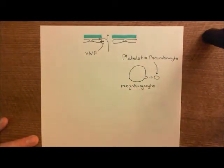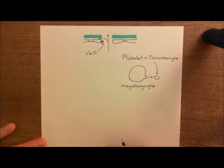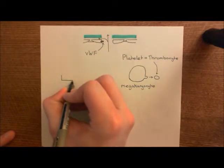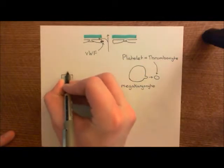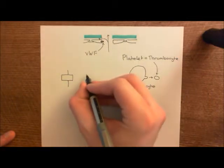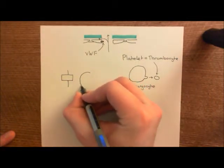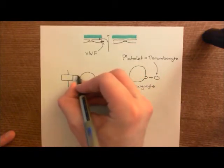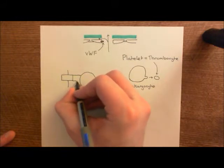So megakaryocytes are responsible for the production of these platelets or thrombocytes in the blood, and platelets play a very important part in the hemostasis pathway. It's platelets which are going to interact with our von Willebrand factor. So if we have our von Willebrand factor here drawn bigger on our endothelial cell membrane now, the platelet or thrombocyte is going to be exposed to this von Willebrand factor.